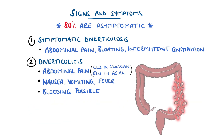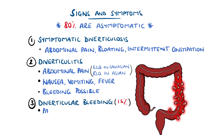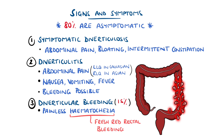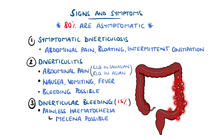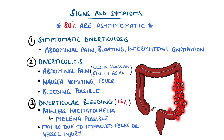Bleeding from the diverticula occurs in around 15% of cases and usually causes painless haematochezia, meaning a fresh red bleed rather than melaena, which is a dark, black, stained stool, getting its colour from haemoglobin being digested in the gastrointestinal tract. Although right-sided diverticular bleeding can cause melaena. The exact reason for the bleeding is not certain, but may be due to impacted faeces eroding the vessel surface, or the diverticulum growing and tearing the vessels.